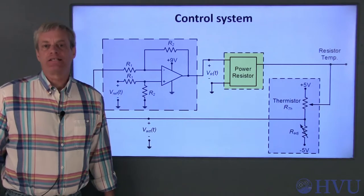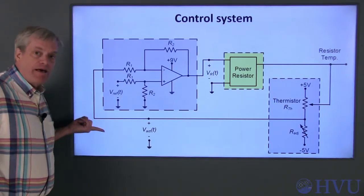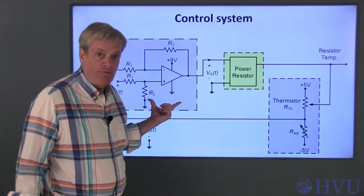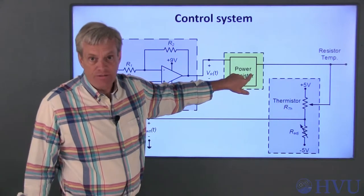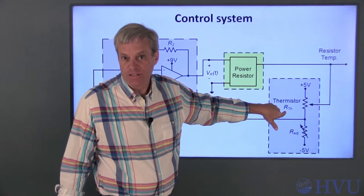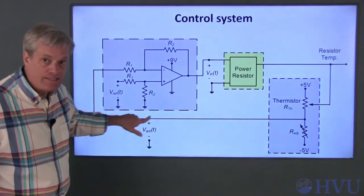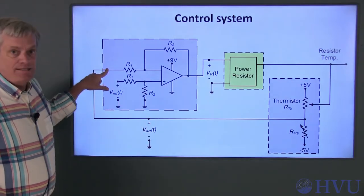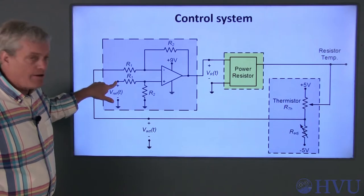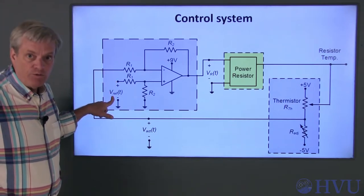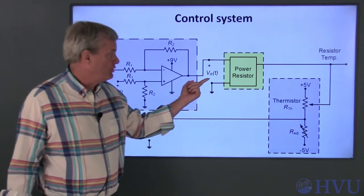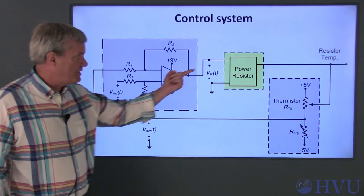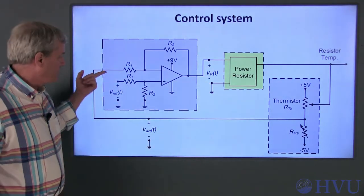Finally, let's talk about interconnecting the components to make the overall circuit function. This is a schematic of the complete system. The resistor we're heating is here. The voltage V sub R, that's the output of the difference amplifier, is applied across this resistor. The thermistor is attached to this resistor, so as the resistor changes temperature, the thermistor's resistance changes. This in turn changes the voltage Vact in this voltage divider, which indicates the temperature of the power resistor. The voltage Vact is applied to one terminal of the difference amplifier, and the reference voltage is applied to the other terminal. Ultimately, this circuit will adjust the voltage applied to the resistor, V sub R, in order to make the actual voltage match the reference voltage.